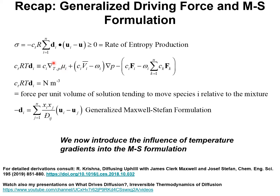This is the isothermal isobaric gradient of the molar chemical potential. Ci is the molar concentration of species i. We have the contribution of the pressure gradient with a multiplier that is the term CiVi, where Vi is the partial molar volume of species i. The product of CiVi is the volume fraction.